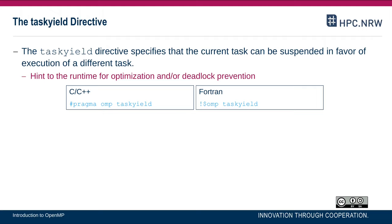By default, if it's a tied task, the same thread — the executor — will resume it. In an untied task, it could be a different thread. When is this useful? It could be a hint to the runtime for optimization and possibly for deadlock prevention, when using constructs like locks or other synchronization that could lead to a deadlock. It could allow the runtime to perform some optimizations.